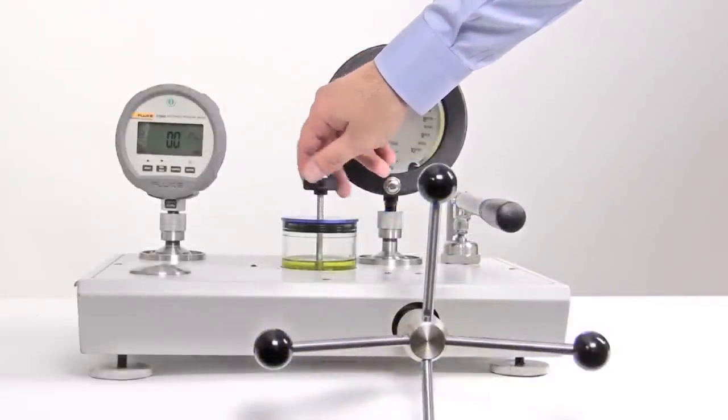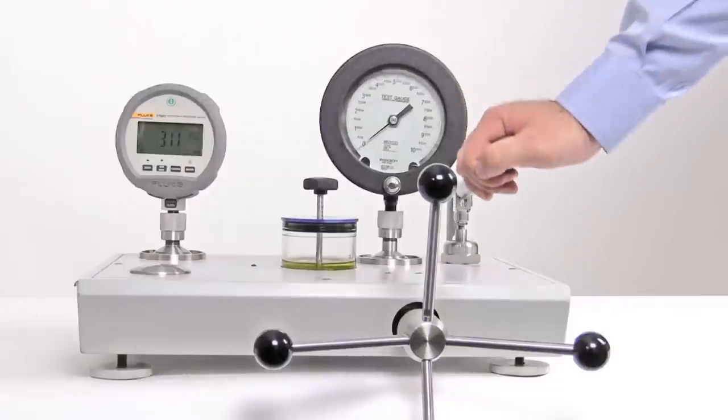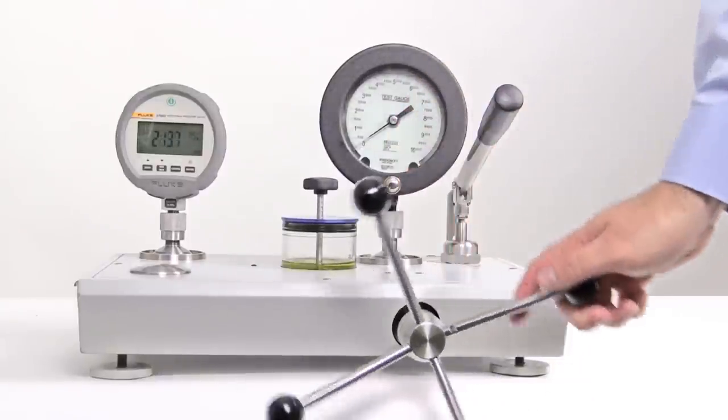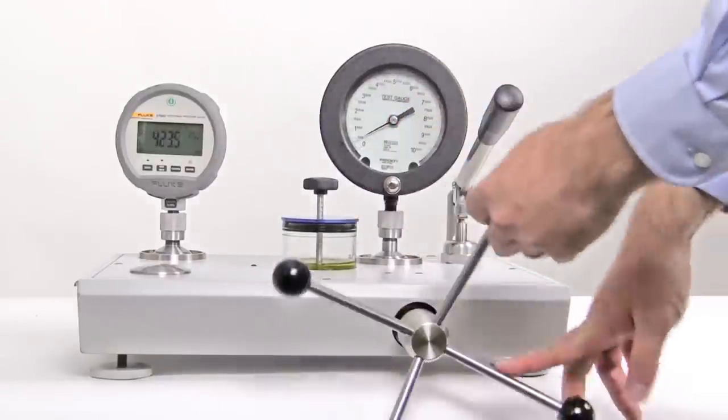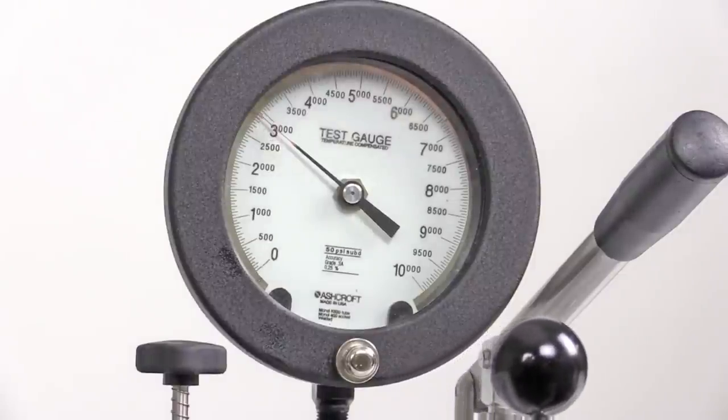To generate pressure, simply close the reservoir valve and use the screw pump to increase the pressure. The screw pump has a fine pitch thread allowing for fine tuning of pressures.